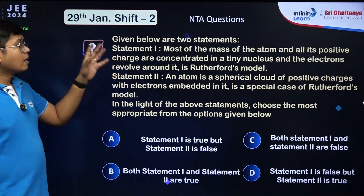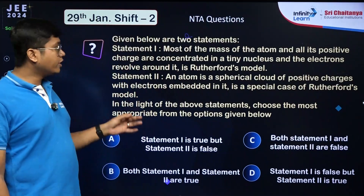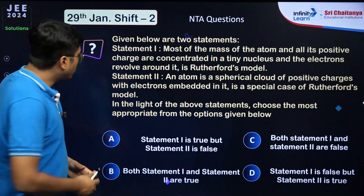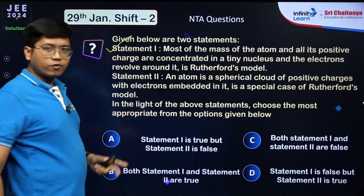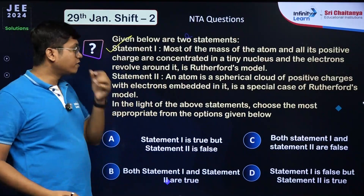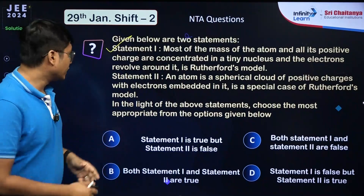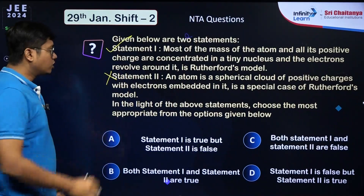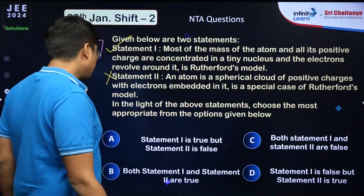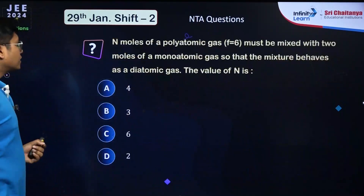Two statements are given. Statement 1: most mass and all positive charge concentrated in a tiny nucleus with electrons revolving around it — this is Rutherford's model and is correct. Statement 2: an atom is a spherical cloud of positive charges with electrons embedded — this is the plum pudding model and is incorrect. Answer: option A.